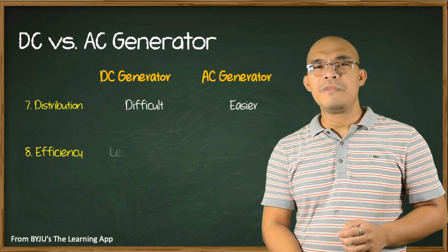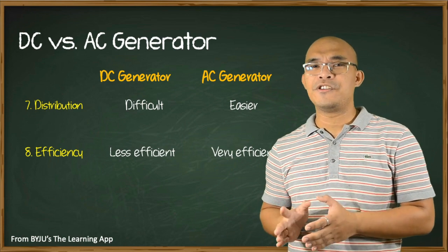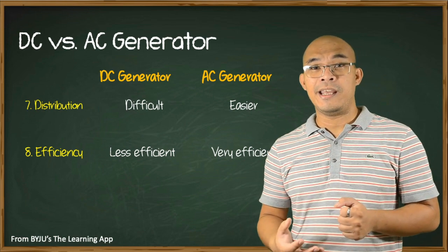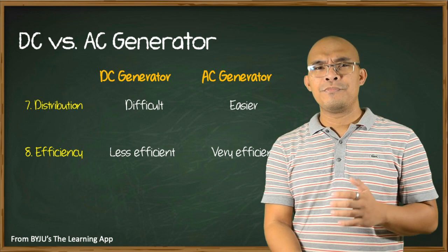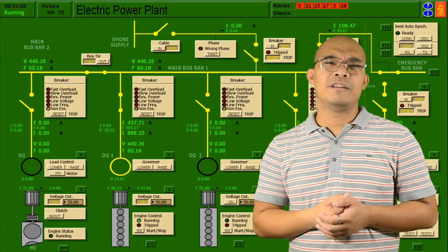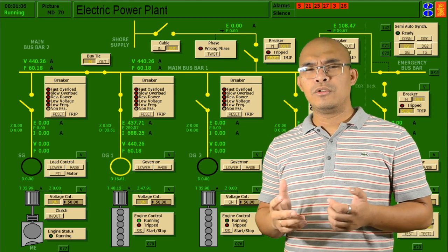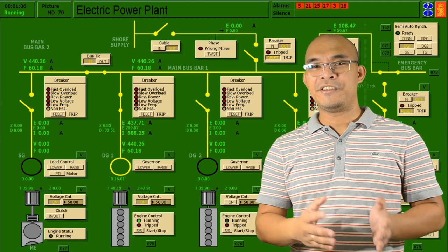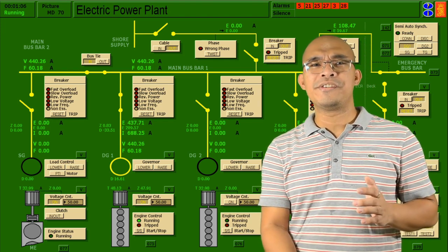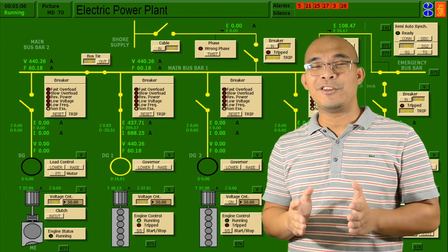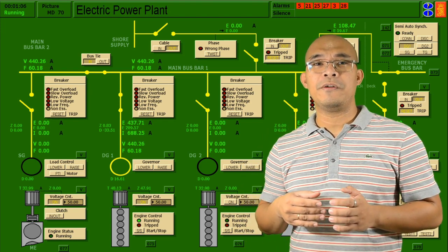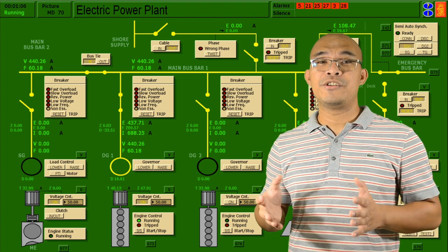DC generators are less efficient due to sparking and other losses such as copper, mechanical, and hysteresis losses, while AC generators are very efficient as the energy losses are less. On board ships, the emergency generator, diesel generators one and two, turbo and shaft generators are alternating current or AC generators. Hence, as future marine engineers, it is important to understand the fundamental working principles of an AC generator or alternators. For this lecture, the discussions and illustrations are from Practical Marine Electrical Knowledge, third edition, by Dennis Hall.